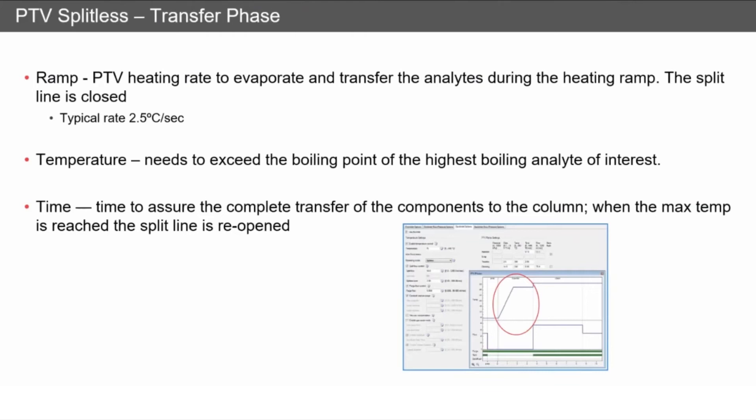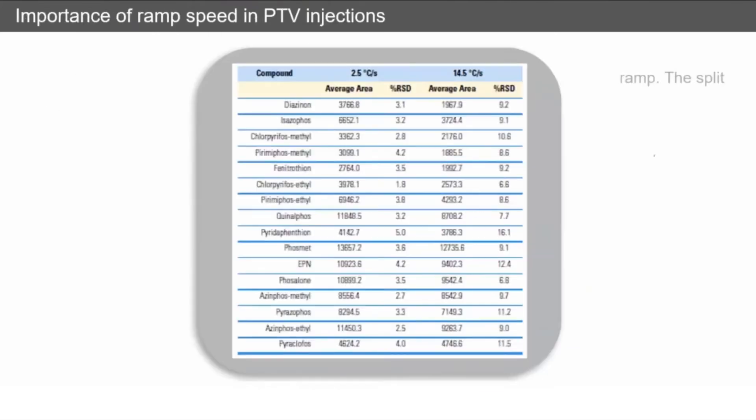Like I said, the ramp speed is really important. We've got a series of pesticides here. When we run a ramp speed of 2.5 degrees per second, we get really good RSDs, less than 4%. However, if we ramp this up too fast, we get much higher RSDs. This is due to irreproducible expansion of the solvent and you will lose some compounds via the split line because the solvent's just massively evaporating in an uncontrolled manner.